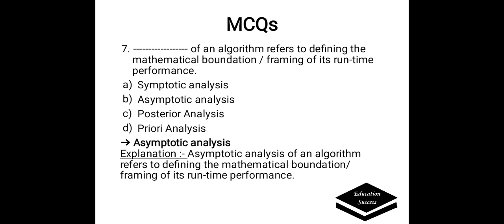Dash of an algorithm refers to defining the mathematical foundation or framing of its runtime performance. Options are: a) sympathetic analysis, b) a syntactic analysis, c) posterior analysis, or d) priory analysis. Correct answer is a priori analysis. A priori analysis of an algorithm refers to defining the mathematical foundation or framing of its runtime performance.